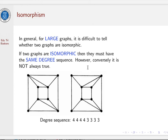This is one of the examples. In fact, we have many examples for that. These two graphs have the same degree sequence: four appears four times, and three appears four times. However, they are not isomorphic. Why? Do you know why? I give you one minute to think about.